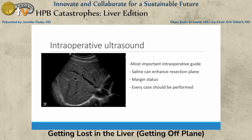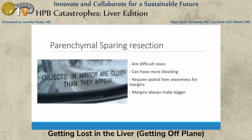Intraoperative ultrasound is essential — you need to be very adept with it because it will get you out of trouble. When transecting through the liver, I'll often fill the cavity with water so you can actually see the transection zone with ultrasound. Minimally invasively, I get frustrated because the water comes back through, but it is a useful backup. For parenchymal sparing resections, I use the end of the ultrasound probe to mark my margins because objects are always closer than they appear. Early in my career I would always get a positive margin; marking consistently with the probe has really helped decrease that.